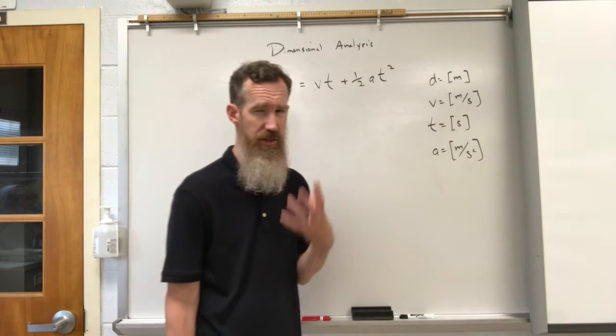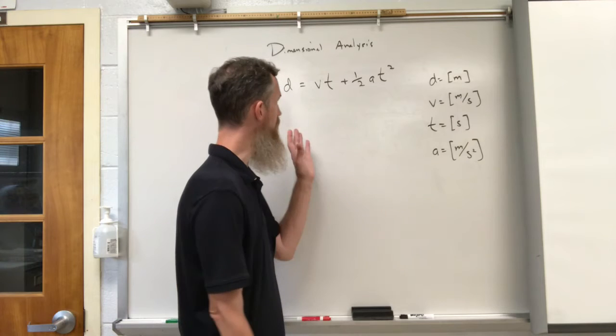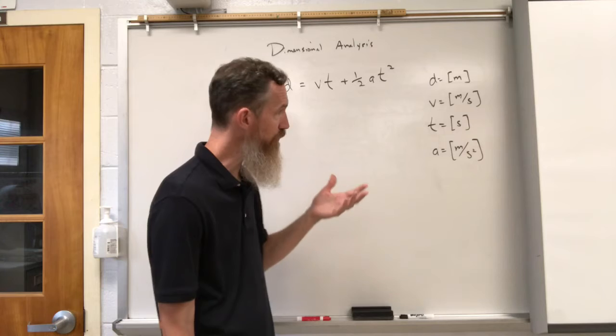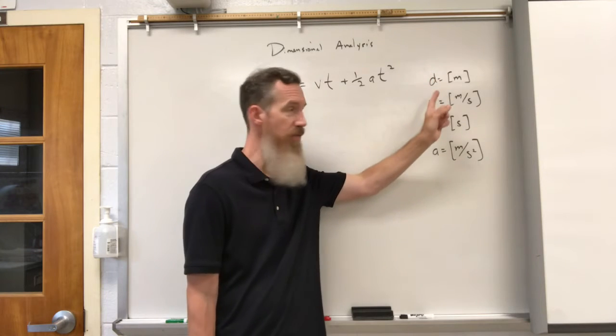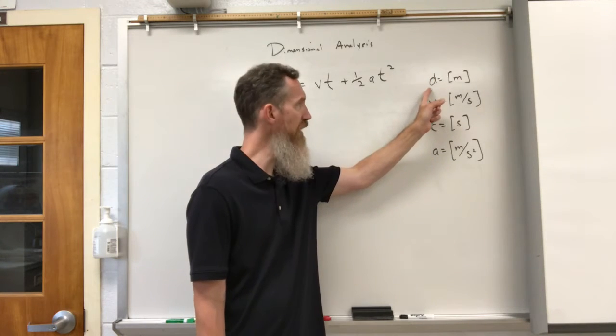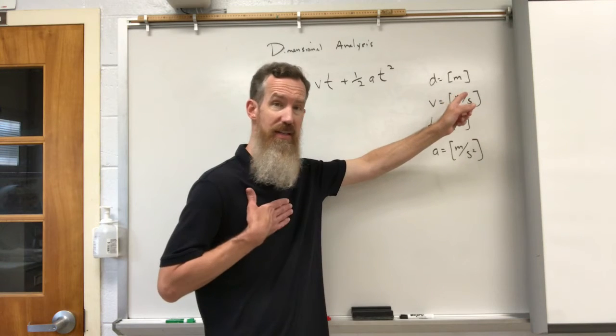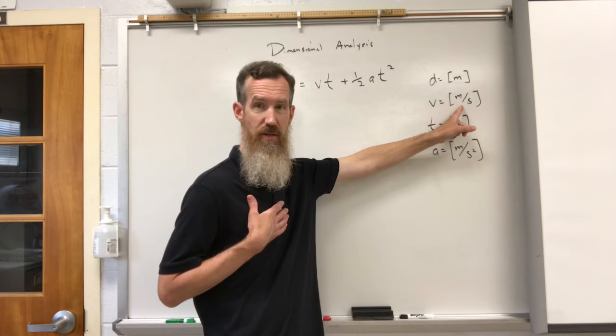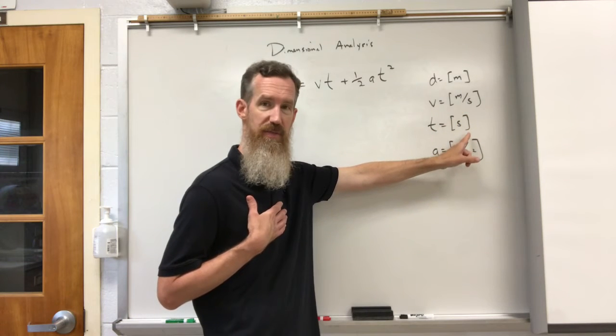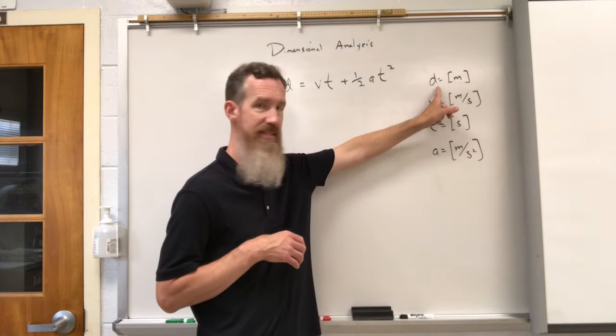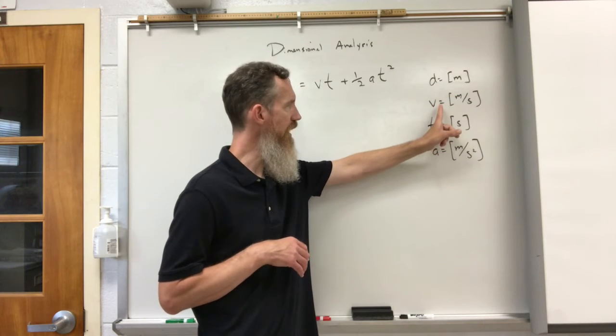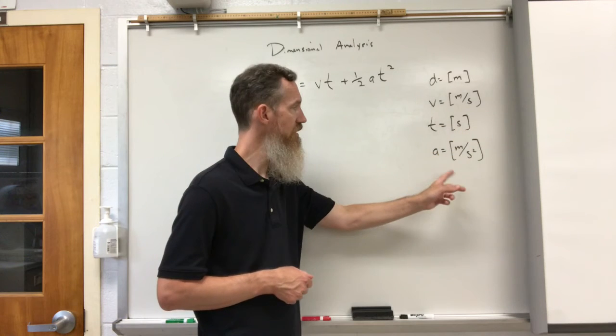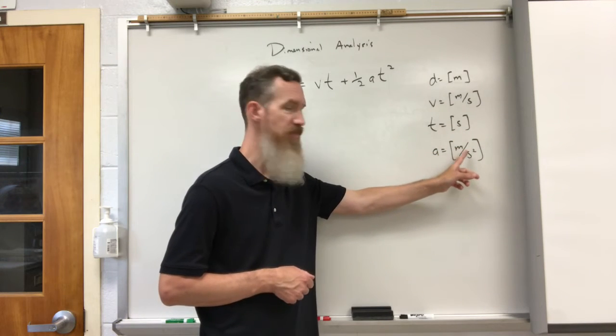You would have to know what the units are for these particular variables. So for now I'll list those variables with their appropriate units. I list units in brackets to show that I'm representing units. This says that any distance is measured in meters, any velocity is measured in meters per second, time is measured in seconds, and acceleration in meters per second squared.